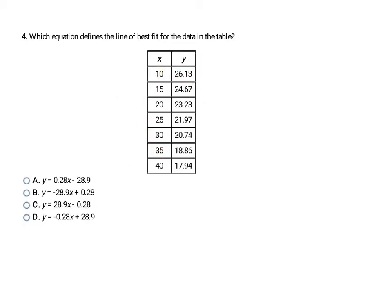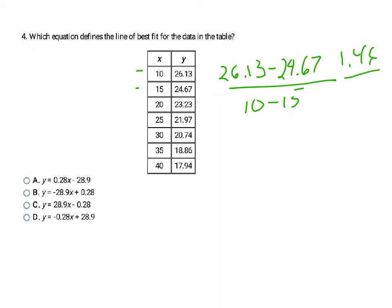This question gives us a table and wants us to write an equation of the line of best fit. I realize they're all lines, so the number by the X is going to be the slope. To get a rough idea of the slope, I take two rows — the first two rows — and subtract the y's on top and the x's on the bottom. That's your slope formula. So 26.13 minus 24.67 is 1.46, divided by negative 5 (since 10 minus 15 is negative 5), giving me approximately negative 0.292. So I'm looking for a slope similar to that decimal.